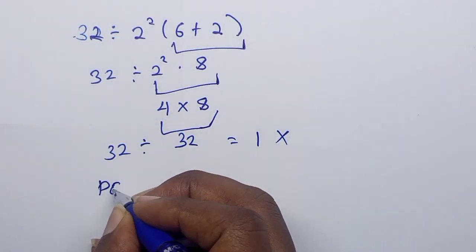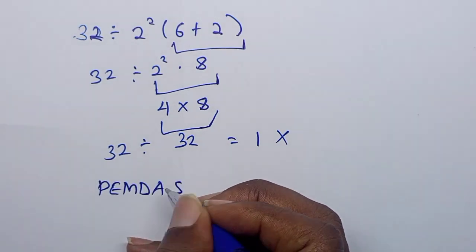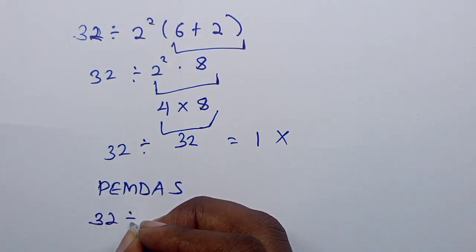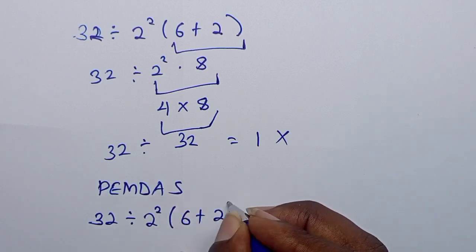So if you follow PEMDAS, we have 32 divided by 2 squared times 6 plus 2.